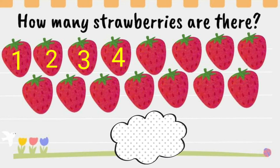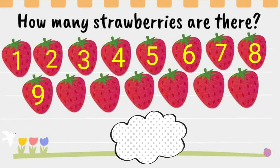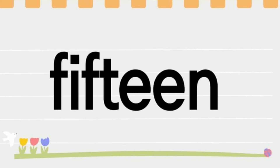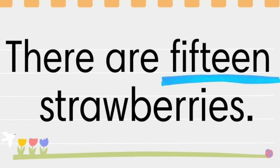4, 5, 6, 7, 8, 9, 10, 11, 12, 13, 14, 15. 15 strawberries. Students, let's spell 15. Please repeat after me. F-I-F-T-E-E-N, 15. There are 15 strawberries.